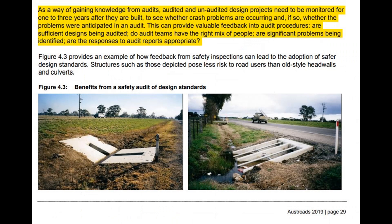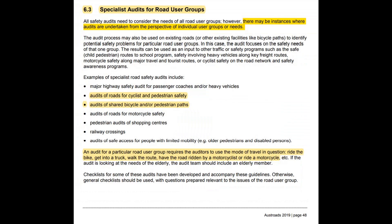An interesting point that hasn't been widely covered: once an audit is done, the project should be monitored for one to three years after it's been built to see if crash problems are occurring and whether they were anticipated in the audit. So we'll have to come back in one to three years' time and see how the cycleway is performing. Another key difference in the 2019 AustRoads guide is that if you're auditing a particular road user group, the auditors have to use that mode of travel — i.e., ride the bike. I don't think that was done for this particular audit.